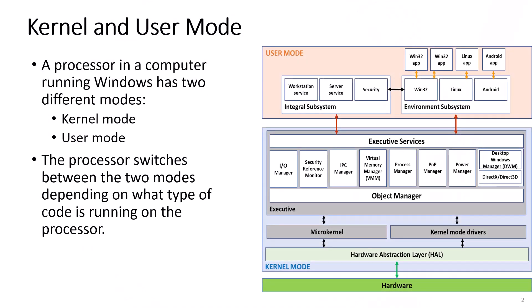A processor in a computer running Windows has two different modes: kernel mode and user mode. The processor switches between the two modes depending on what type of code is running on the processor.